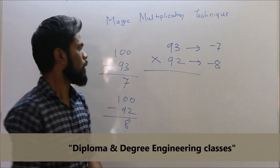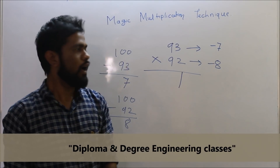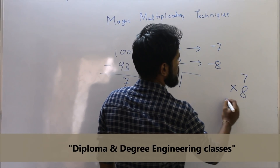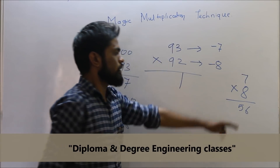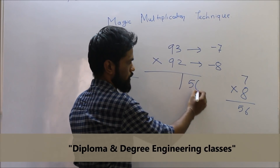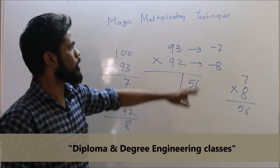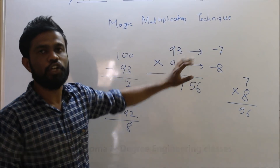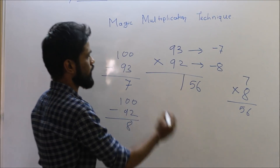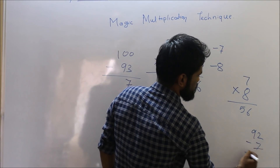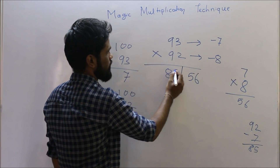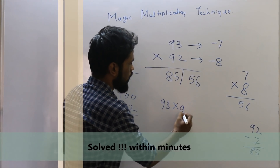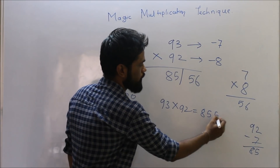In the next step, multiply the two differences: seven multiplied by eight equals fifty-six. Write fifty-six in the last compartment. Then subtract seven from ninety-two, or subtract eight from ninety-three — you will get the same answer. Here we subtract eight from ninety-three, and our answer is eighty-five. So our final answer for ninety-three multiplied by ninety-two is eight thousand five hundred and fifty-six.